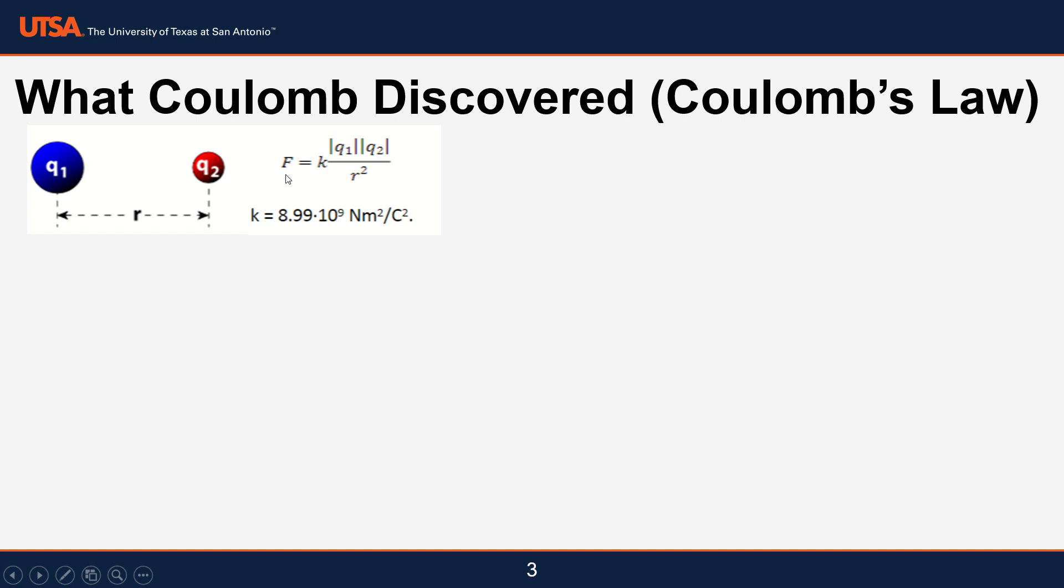He repeated this experiment using different charges and different conditions. After he finished this experiment, he was able to come up with what we know as Coulomb's law, which is shown right here, where your force is equal to K, which is Coulomb's constant, times Q1, the charge, times Q2, the other charge, divided by the distance squared. So he was able to discover this. It's really, really fascinating.